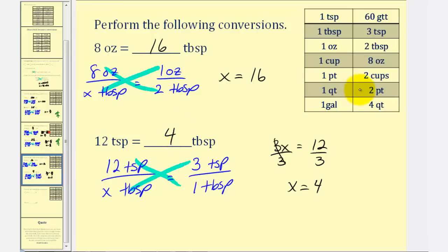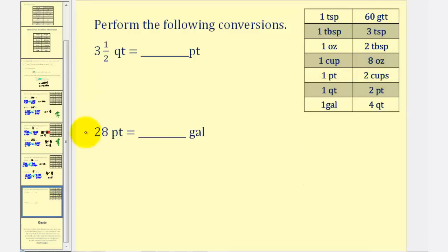We are running short on time, but I do want to take a look at one more example where there's not a direct conversion provided in the table. So let's take a look at converting twenty-eight pints to gallons. There's no conversion in the table that converts pints directly to gallons, but we can convert pints to quarts and then quarts to gallons. We have the option of using two proportions or unit fractions. To keep it consistent, let's use proportions.